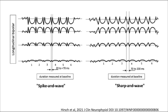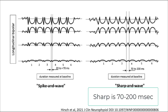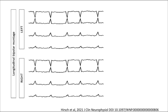Here is an illustration of the difference between spike and wave discharges and sharp and wave discharges. The difference relates to the duration of the sharpest component. A spike is defined as lasting less than 70 milliseconds from takeoff point to return to baseline. A sharp wave is defined as lasting between 70 and 200 milliseconds from takeoff to return to baseline.